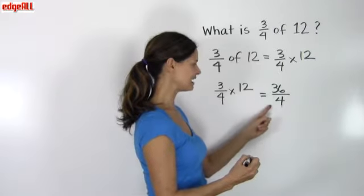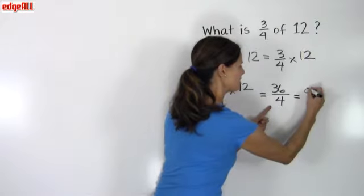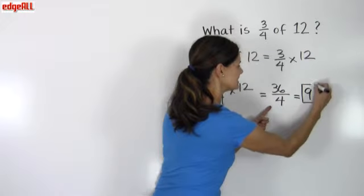4 times the 1 here that would be underneath the 12 would be 4. So 36 divided by 4 is my problem, which we know 36 divided by 4 is 9.